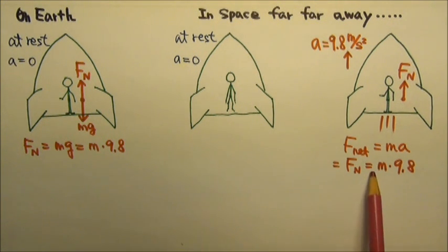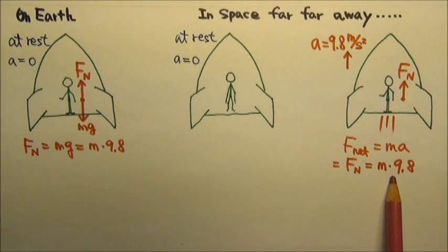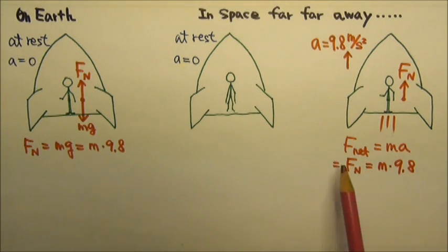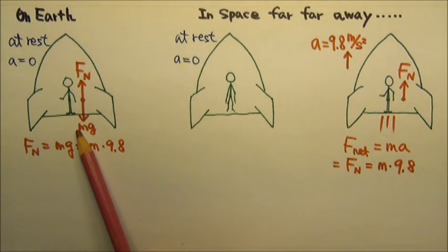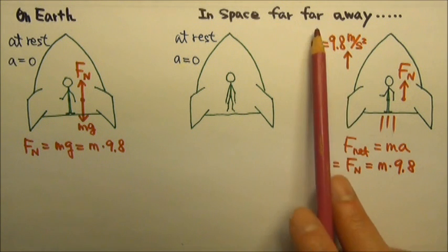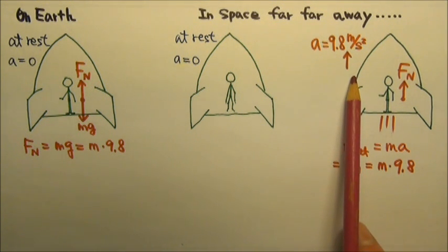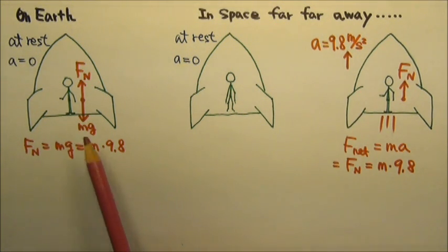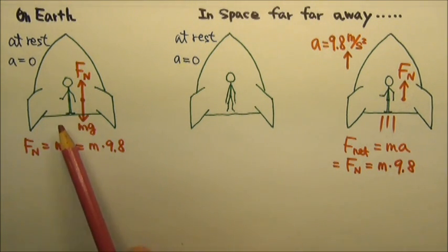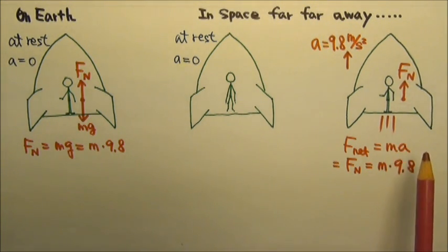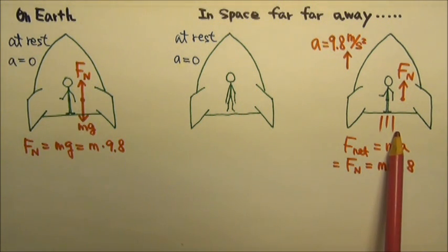In both of these scenarios, the normal forces are the same. The person has the same apparent weight. He pushes on the floor exactly the same way. This means that the effect of gravity feels just like the effect of acceleration. If the person inside the spaceship cannot see, hear, or perceive anything from outside the spaceship, the person would not be able to tell one scenario from the other.